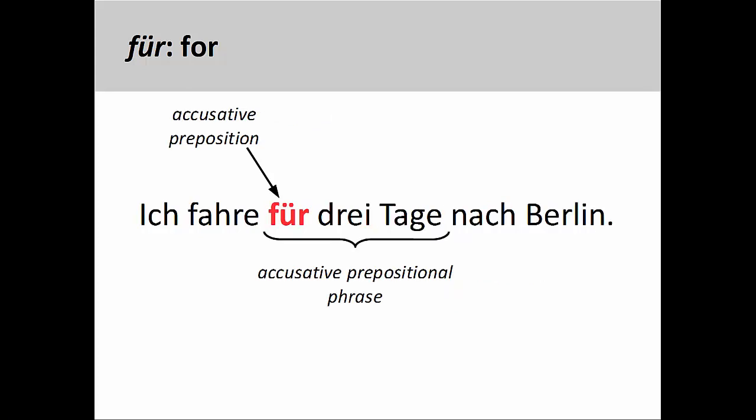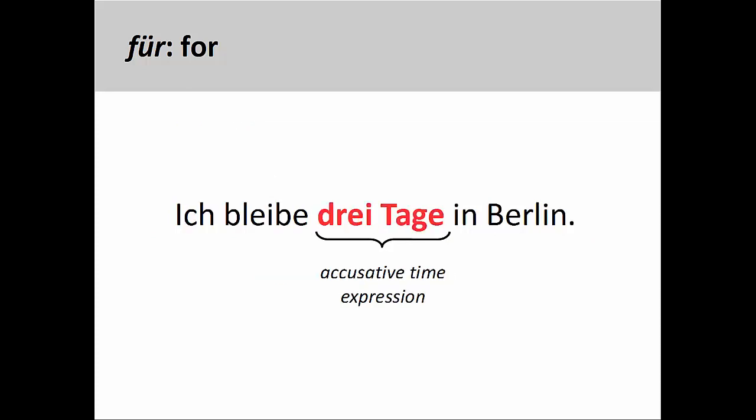Für can also be used to express a duration of time, but only when the verb functions independently of the time element. For example, Ich fahre für drei Tage nach Berlin — I am traveling to Berlin for three days. In this sentence, the accusative prepositional phrase relates how long I intend to stay and does not describe the manner in which I drive. However, if the time expression modifies the activity of the verb, then we must use an accusative time expression without the preposition für. For example, Ich bleibe drei Tage in Berlin — I am staying three days in Berlin. In this sentence, the accusative time expression provides more information with regards to how long I will be staying in Berlin.